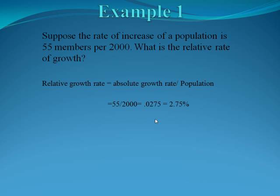Let's look at some examples of how this is applied. Suppose the rate of increase of a population is 55 members per 2,000. What is the relative rate of growth? The relative growth rate is the absolute growth rate, which is 55 members, divided by the population of 2,000. So if we're gaining 55 members for every 2,000, the relative growth rate is 55 divided by 2000, which is 0.0275, or 2.75%.